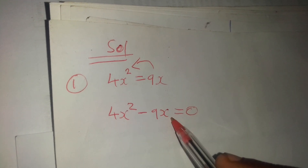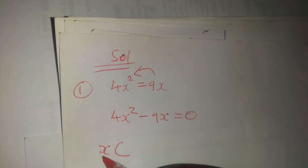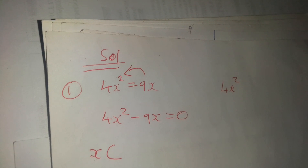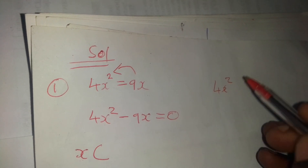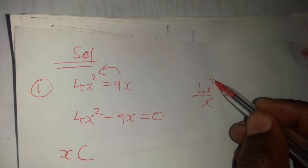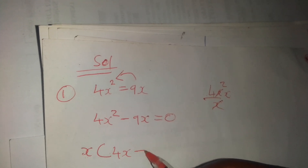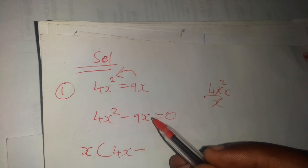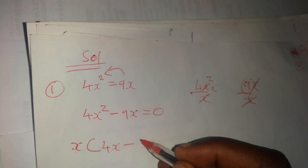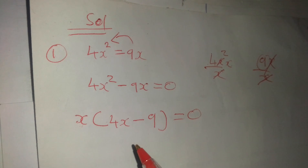At this point we have to find what is common. As you can see, what is common is X. So we have X, and this X goes out. Now we divide — we have 4x squared dividing by X. This X will be cancelled, leaving just 4x. Then minus 9x over X: this X and that X cancel, leaving just 9. So here we have 4x minus 9, then equals 0.